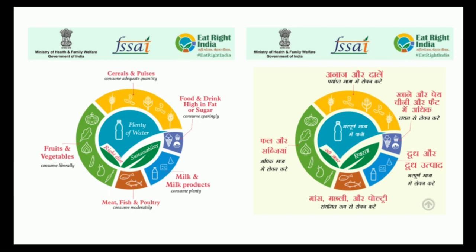Then we have the yellow portion representing cereals and pulses, which should be taken in an adequate amount as they provide proteins and carbohydrates. Then we have foods and drinks that are high in fat and sugar content, and they should be taken in a very less amount, because FSSAI is also working on making people aware of consuming less salt, sugar, and fat. Then we have milk and milk products, which should be consumed in a plenty amount as they provide various minerals and vitamins.